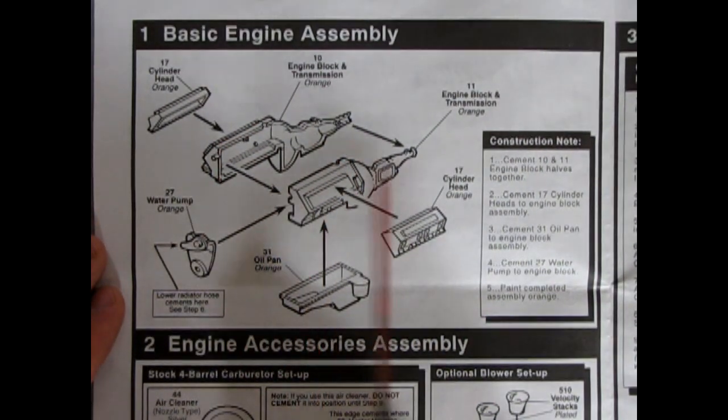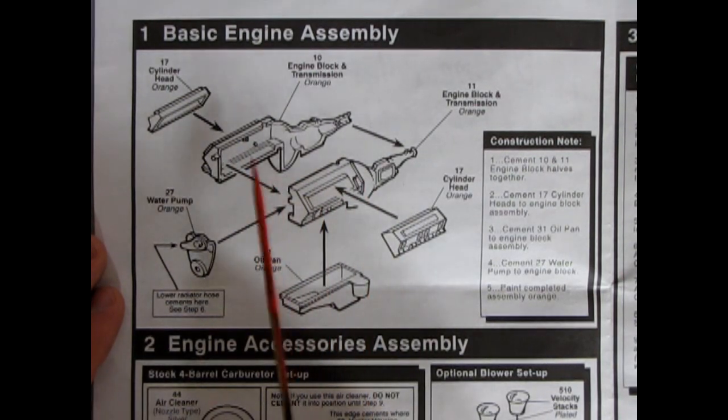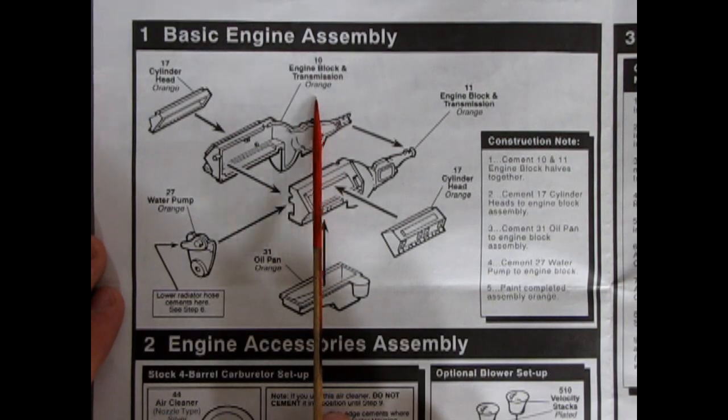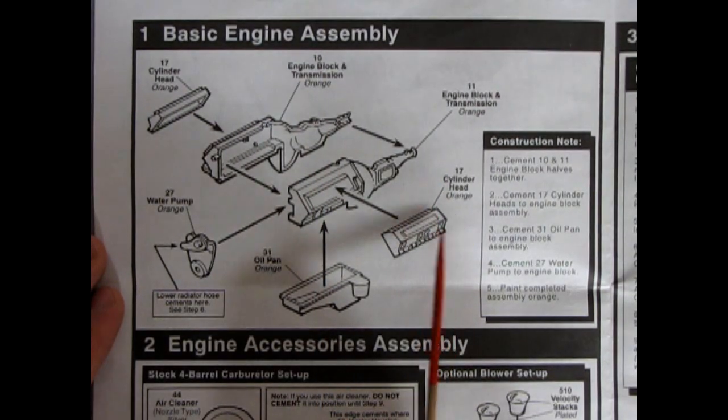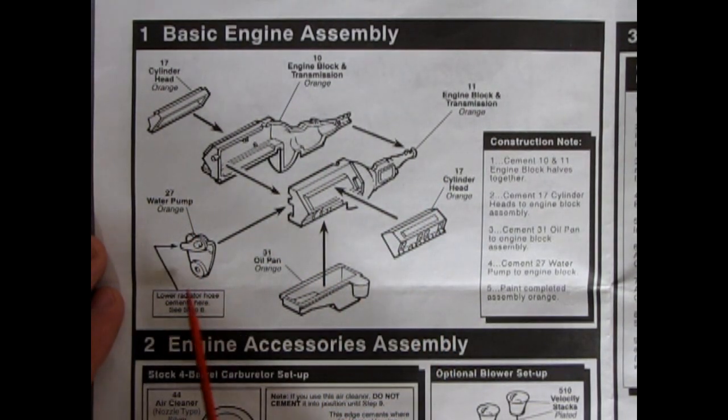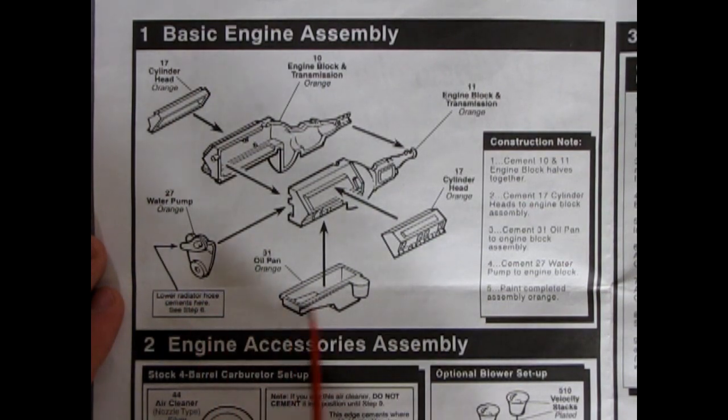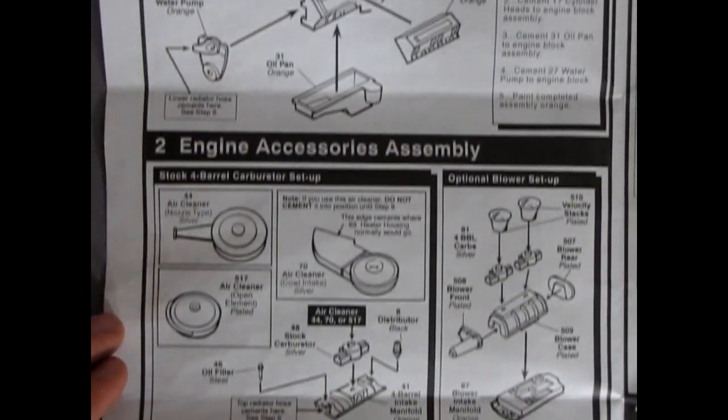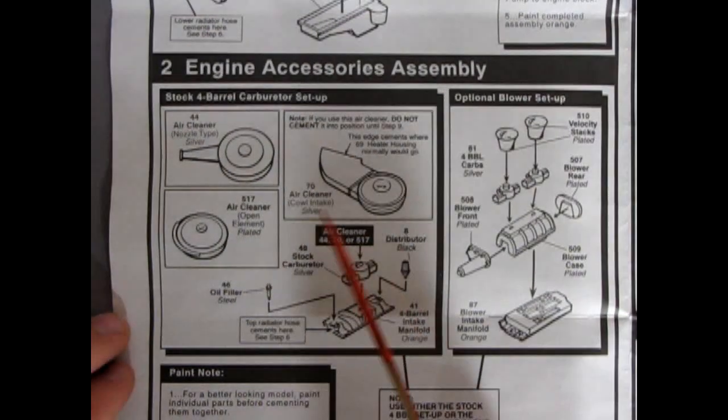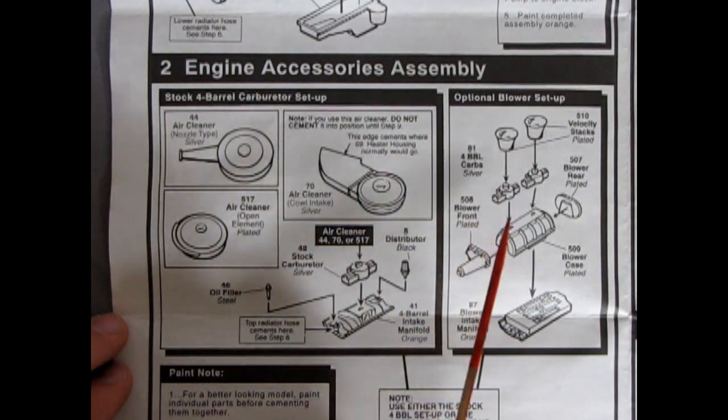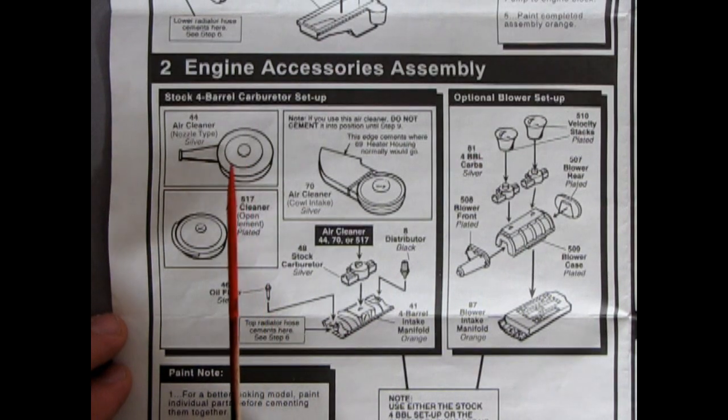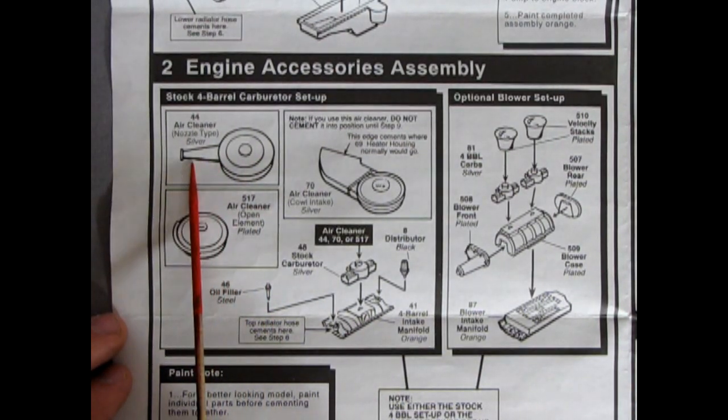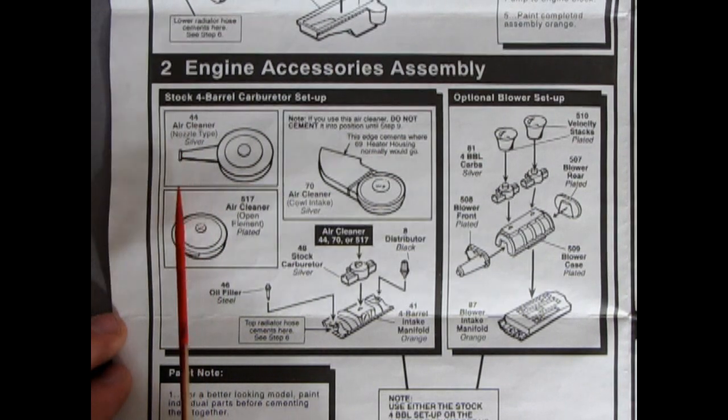However, here's our engine block going together and of course it's two pieces with the transmission and block molded together. It does tell you to paint these orange which would be your Chevrolet engine orange. There's your cylinder heads and your water pump going on the front as well as the engine oil pan. And what's cool about this model kit is coming up right here.